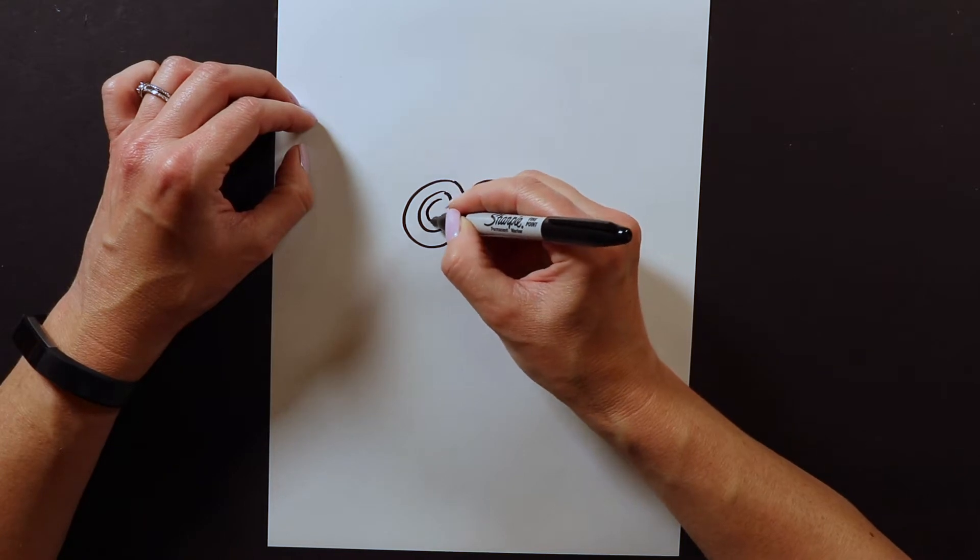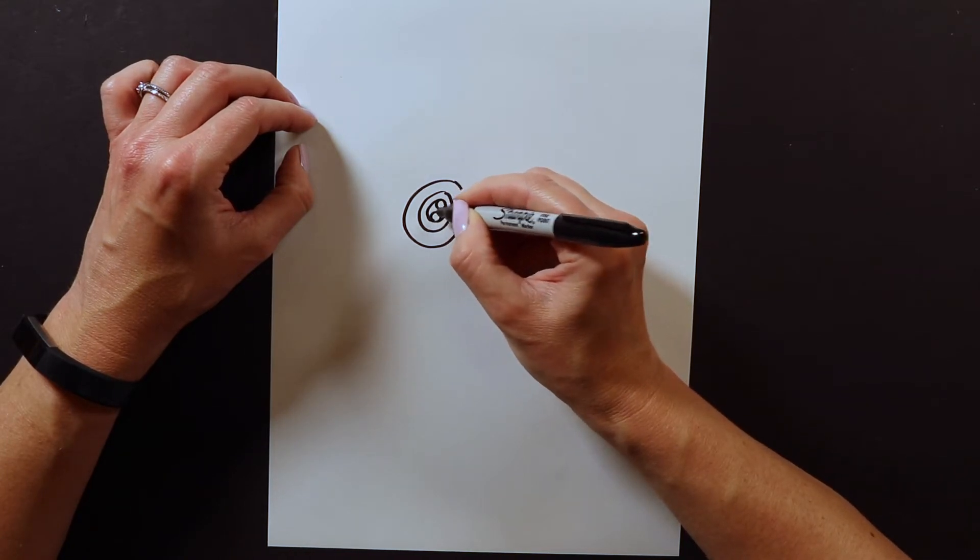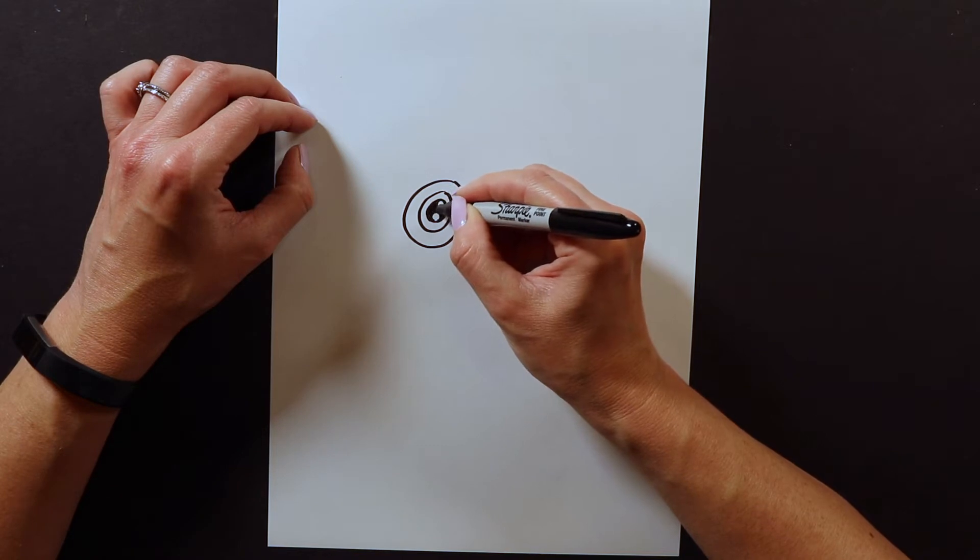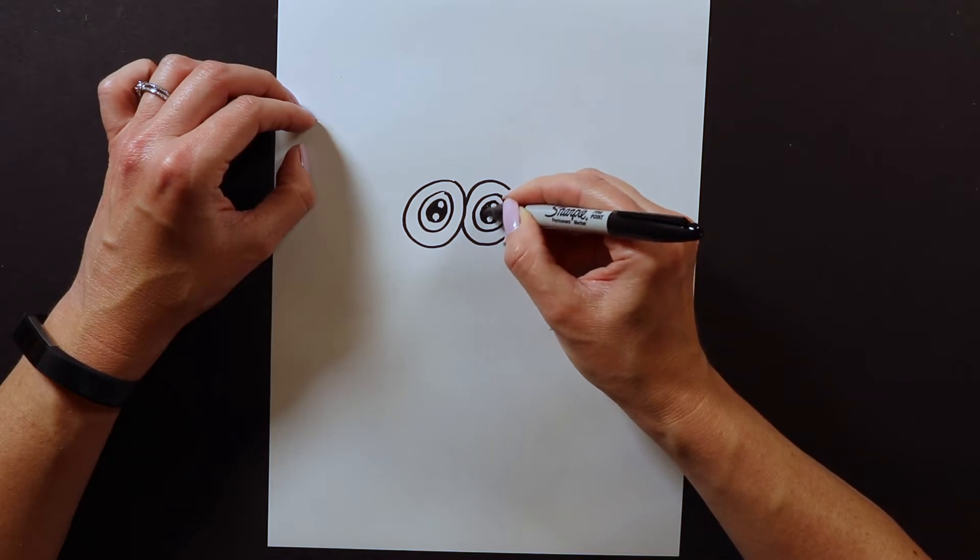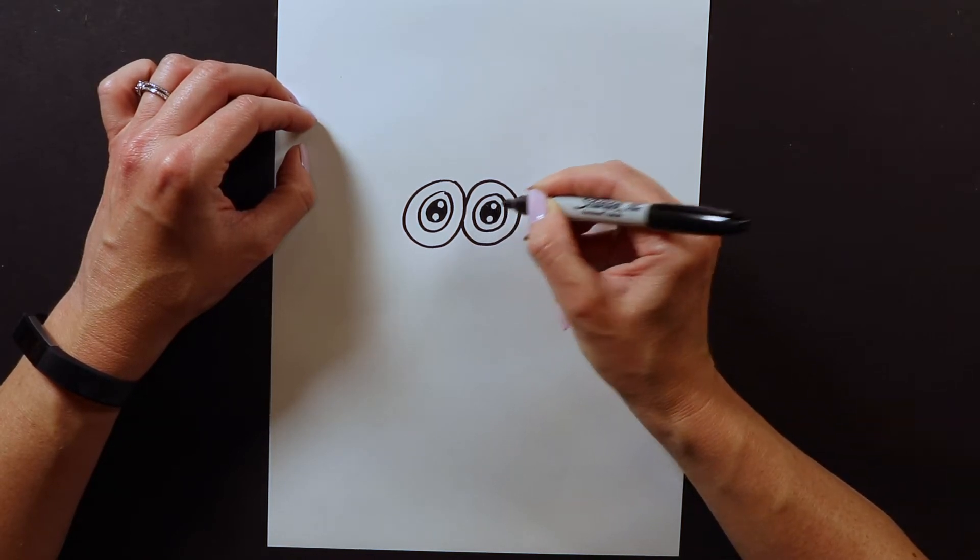I'm gonna draw another circle inside. This circle is gonna have a couple sparkles in it because this is the center of the eye. Same thing on this side, another circle. I'm gonna add some little sparkles in there like that.